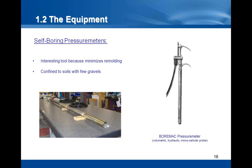And finally, you can see here an example of a self-boring pressure meter. A self-boring pressure meter is an interesting tool because it minimizes the remolding of the soil. However, it is confined to soils with few gravels. You can see on this slide the model Bormack pressure meter, which is based on the volumetric measurement principle. It is hydraulically loaded and is fitted with a monocellular probe.